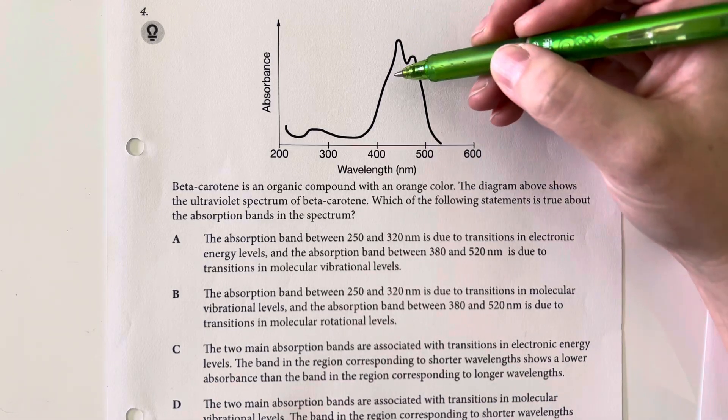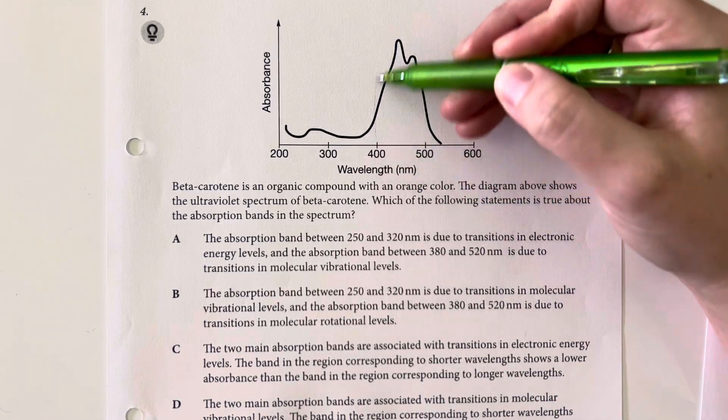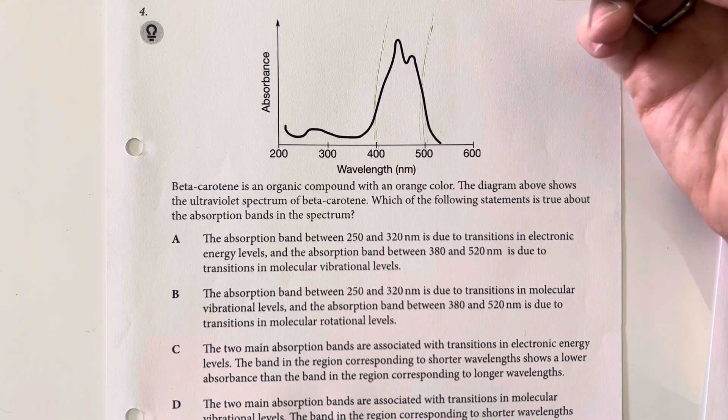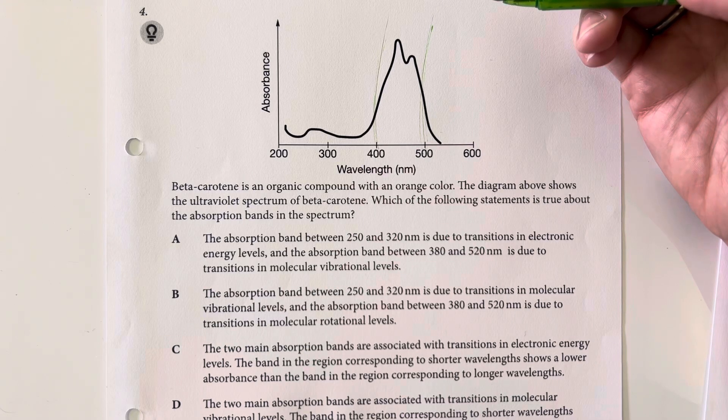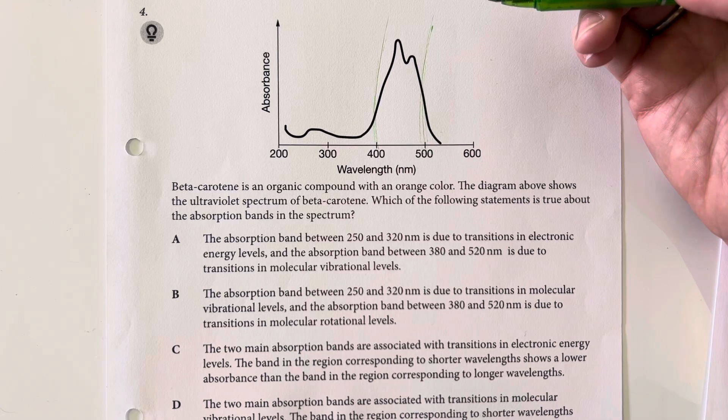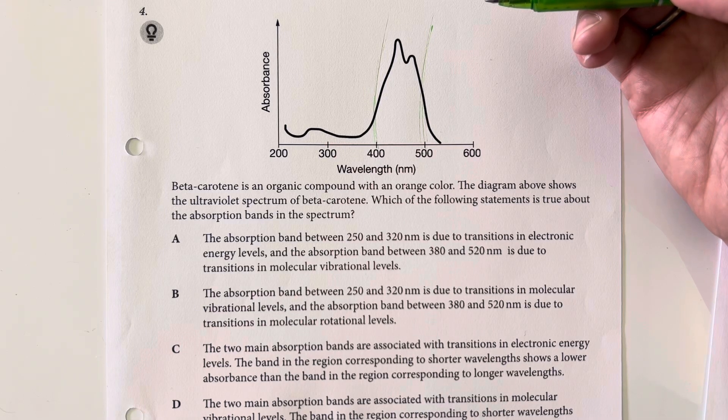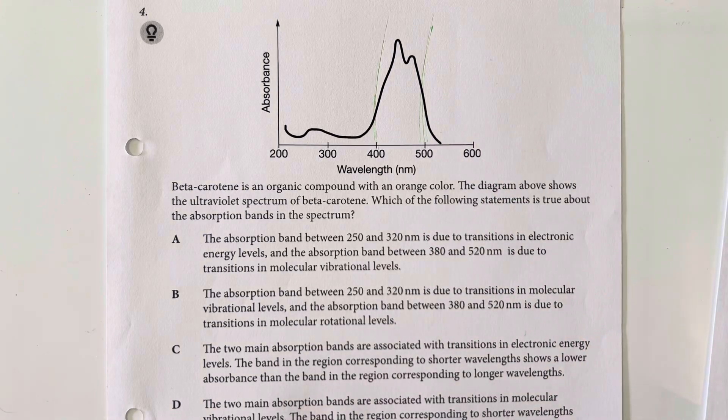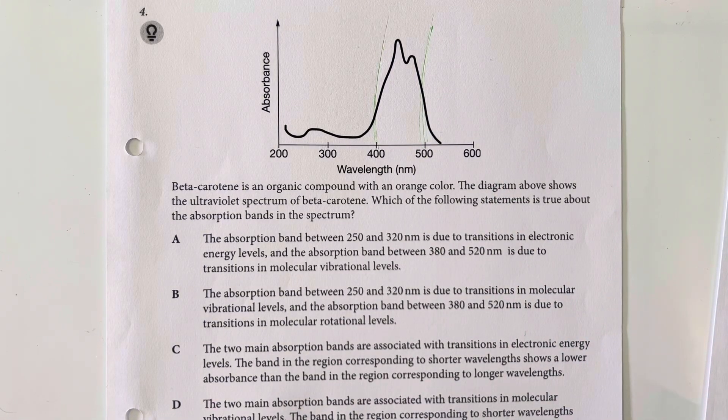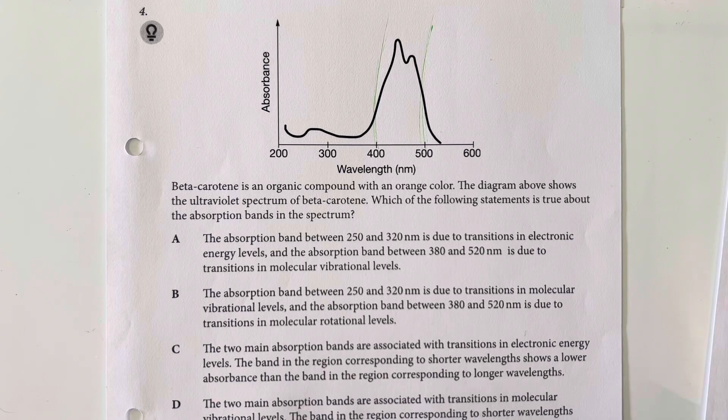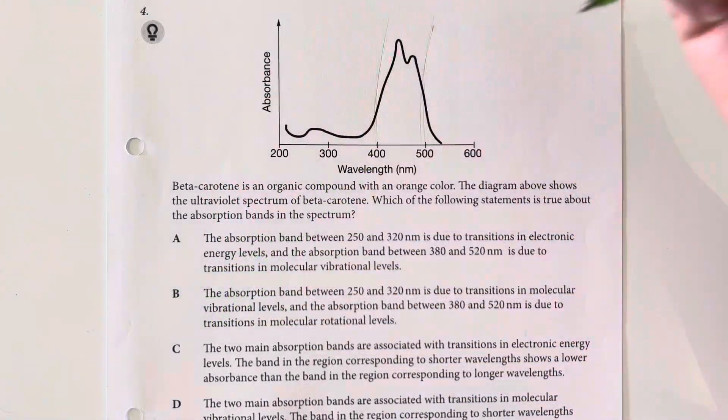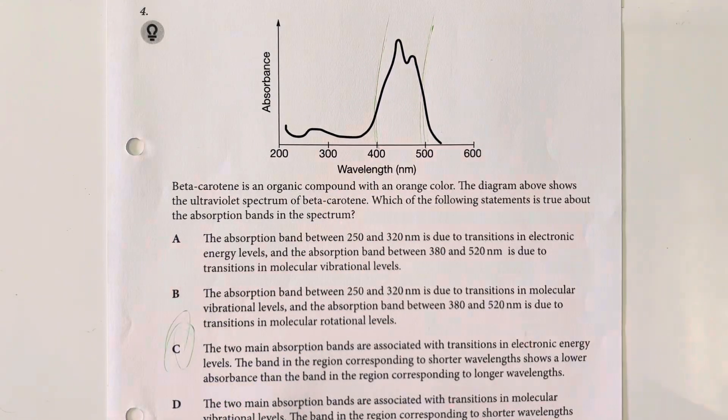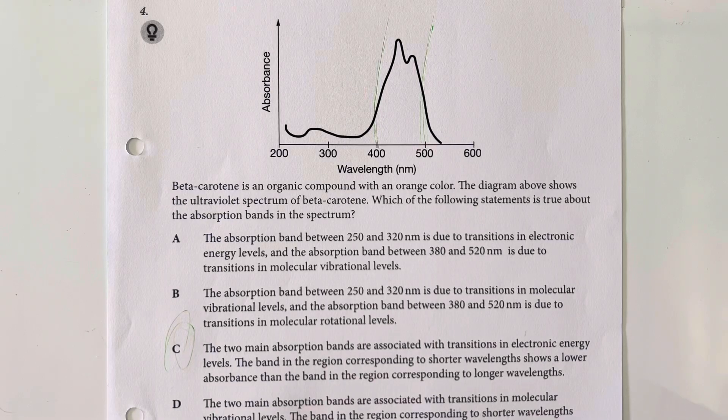So, we can see that the majority of our absorbance here is between 400 and 500 nanometers. And that is going to be visible light. And since it is visible light, we can see the absorption bands are associated with the electronic energy levels, and the shorter wavelengths have a lower absorbance than the corresponding longer wavelengths.